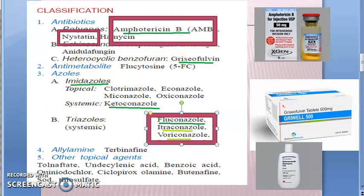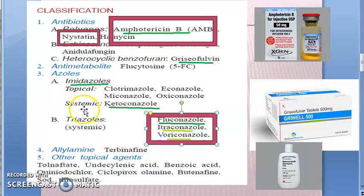In this video we want to look at the details of azoles. There are two types: imidazoles and triazoles. Imidazoles can be further divided into topical — clotrimazole, econazole, miconazole, oxyconazole — and systemic, which is ketoconazole. Triazoles are also systemic: fluconazole, itraconazole, and voriconazole.